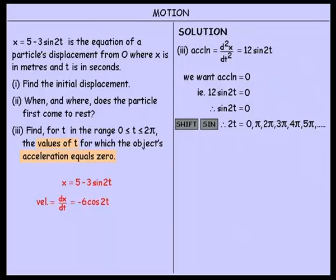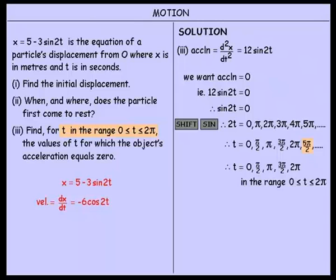That's what 2t equals. To find t we divide everything by 2: t equals 0, π on 2, π, 3π on 2, 2π, 5π on 2, and so on. However, we are restricted to the range where t lies between 0 and 2π, so values greater than 2π are discarded. Therefore t equals 0, π on 2, π, 3π on 2, and 2π — those are the solutions in the range 0 ≤ t ≤ 2π.